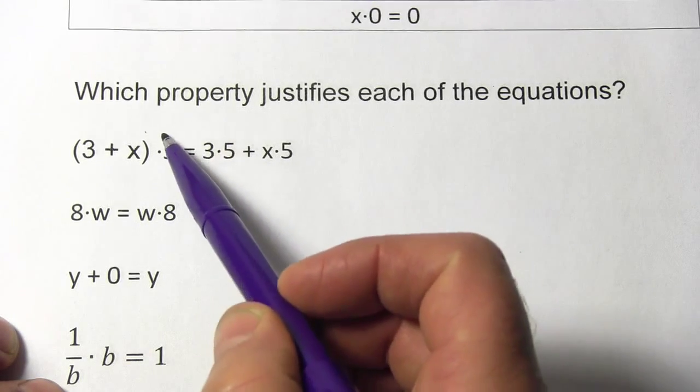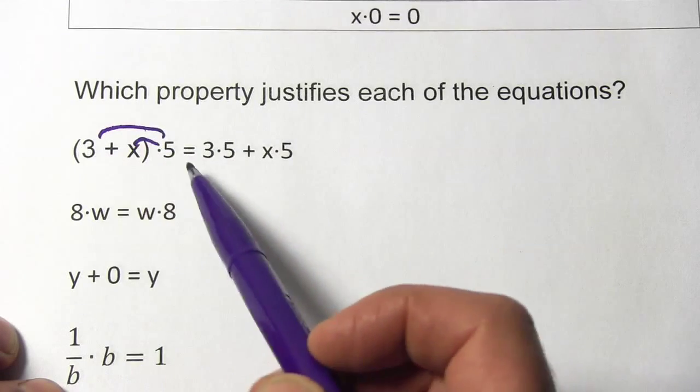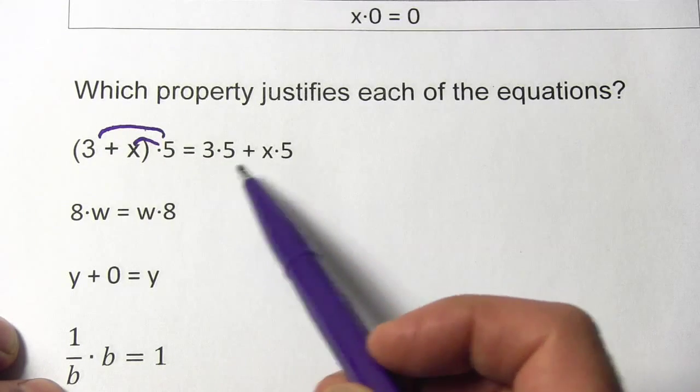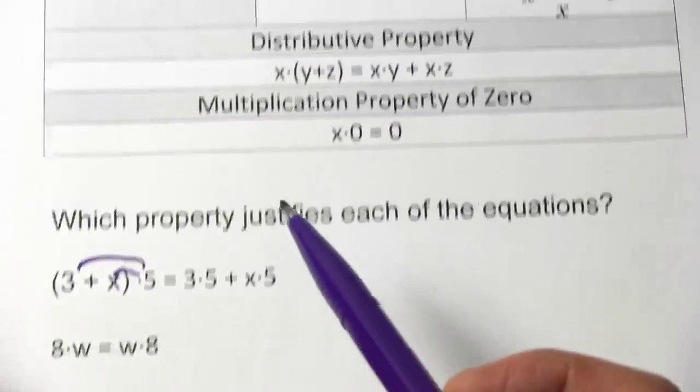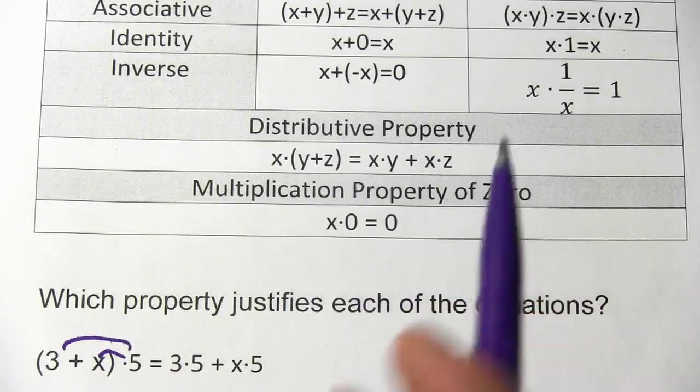I think what happened here is that these were distributed. So the 5 was multiplied by the 3 and the 5 was multiplied by the x. So this should be that distributive property.